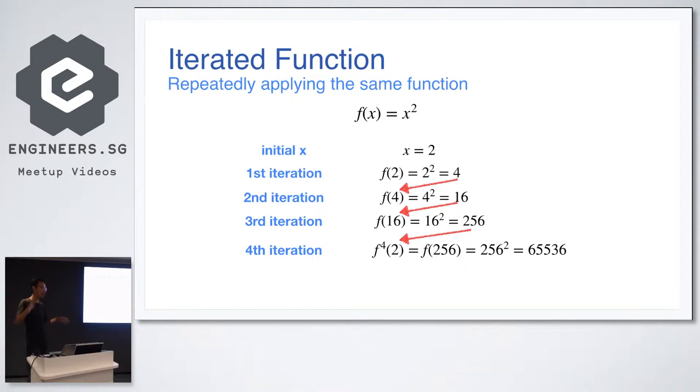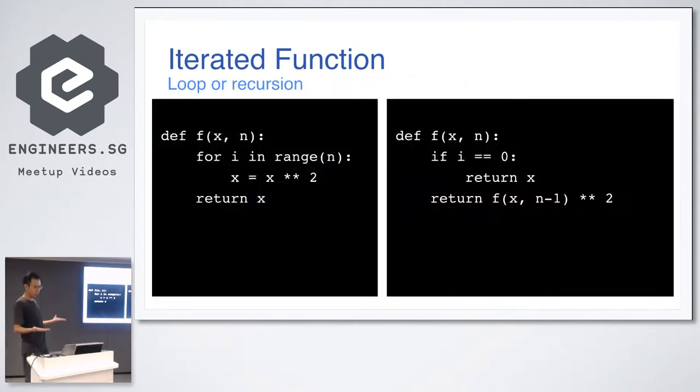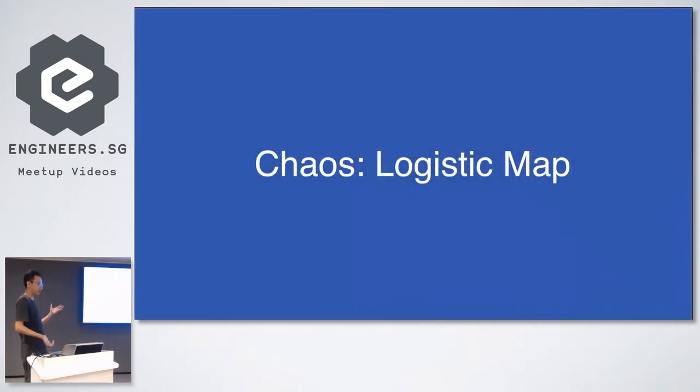So every iteration, you take the output of the previous iteration as the input, and then you get another output, which will in turn be the input of the next iteration. Simple, right? So we're just repeating the same thing. Here's some notation. The superscript four here is not the exponentiation, it's just the fourth iteration of that function.